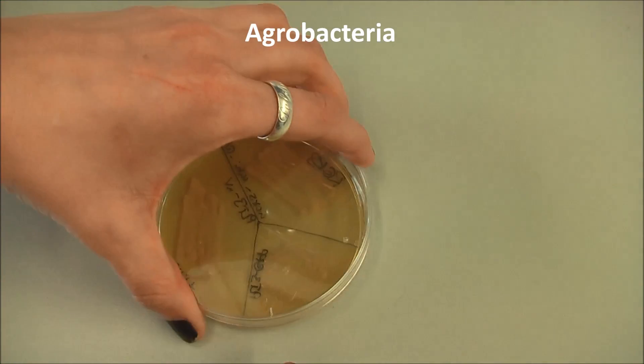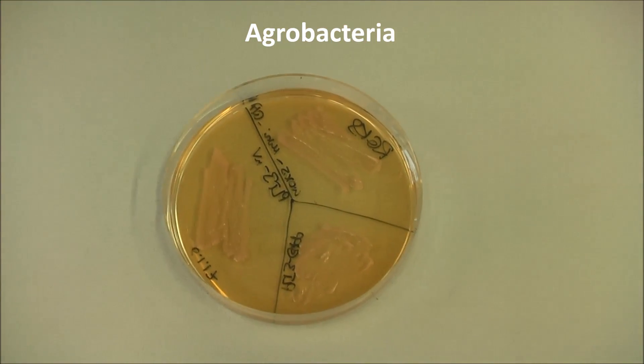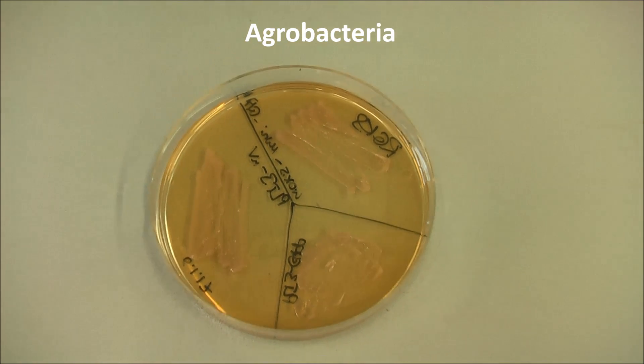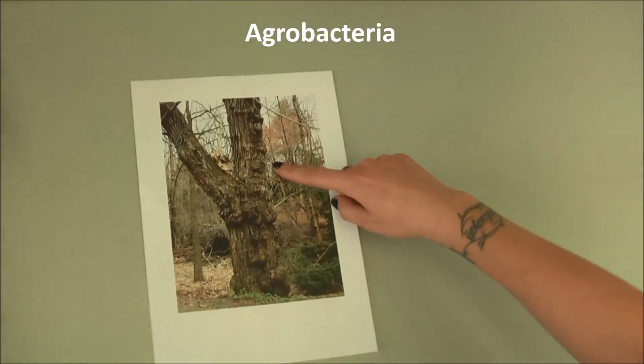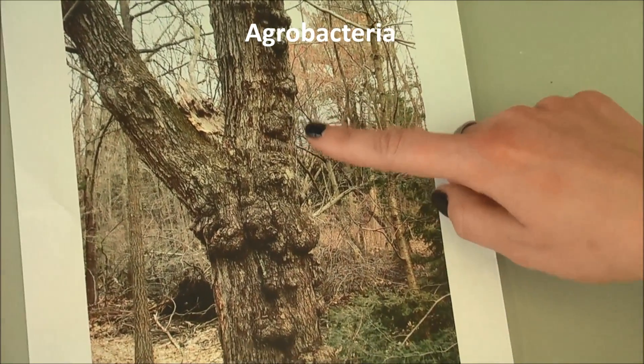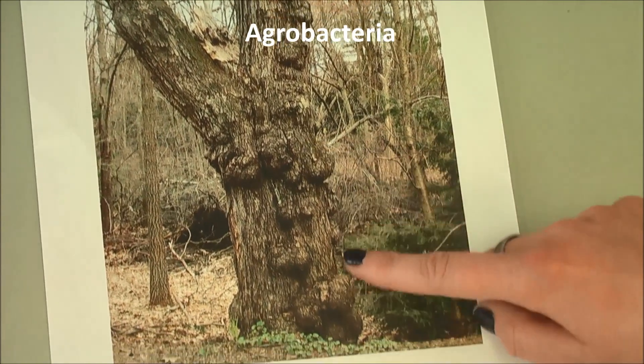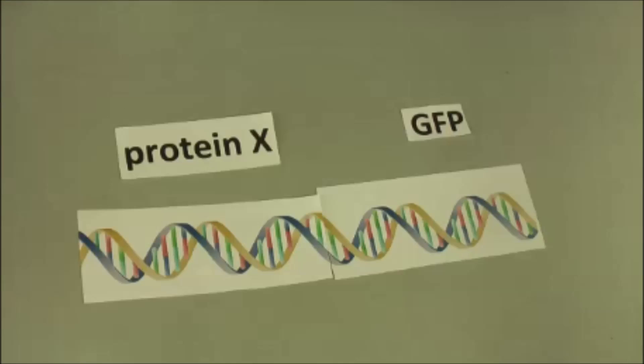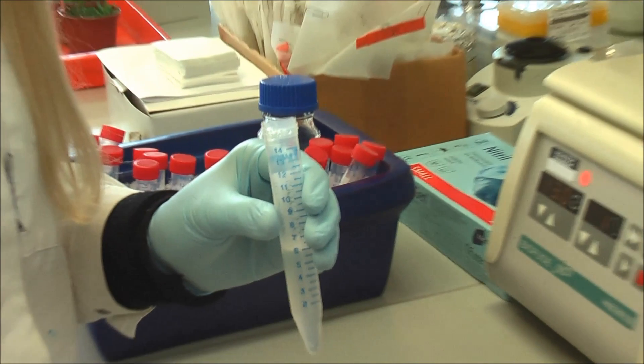To integrate the DNA into a plant, we use agrobacteria. In nature, they live in the soil, enter plant tissue and integrate a part of their own DNA into the plant's DNA. The plant forms galls in which the bacteria can spread. When we integrate the DNA of interest into the agrobacteria, we can use them to transfer this DNA to the plants.